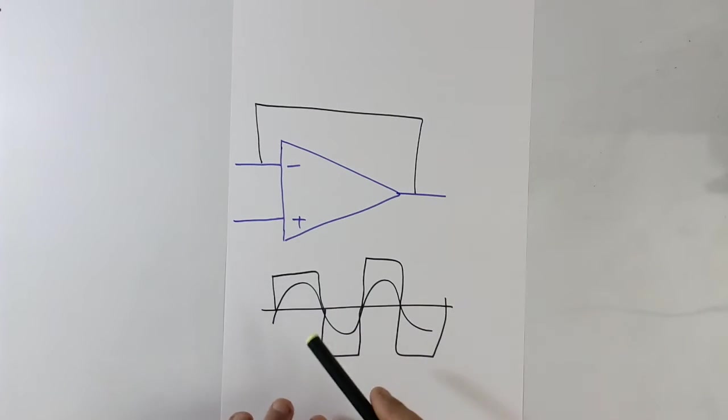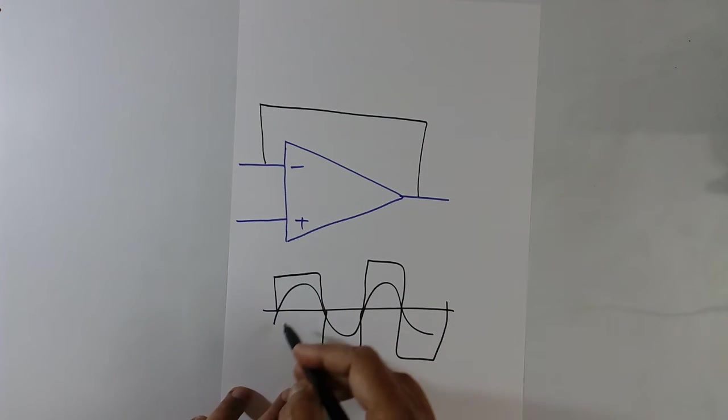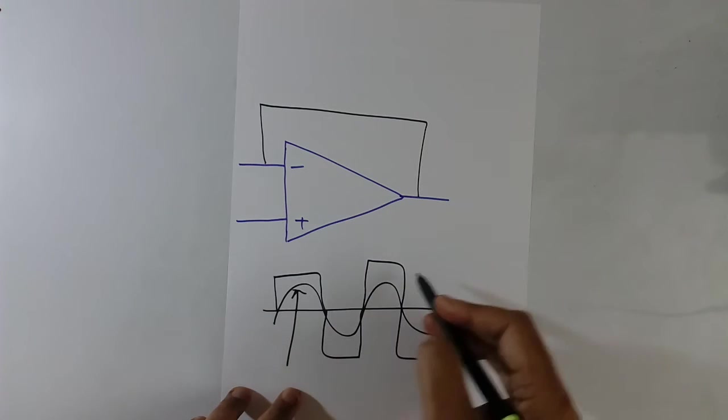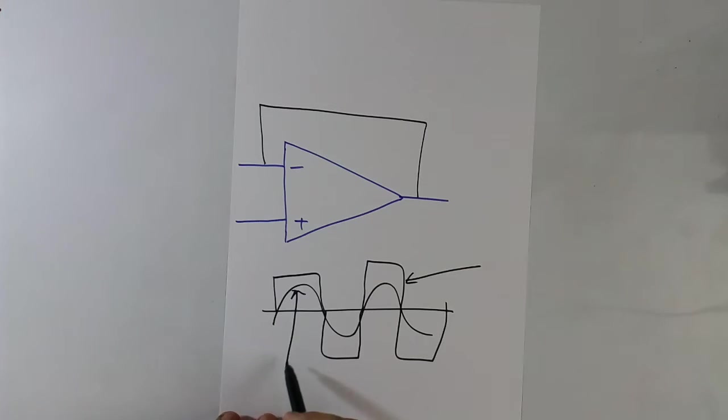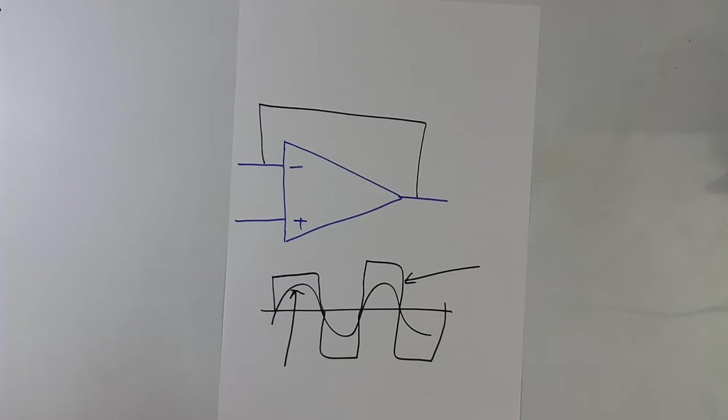So today we are talking about the linear range. This is linear range. This is saturated range. Today we are talking about the linear range of amplifier.